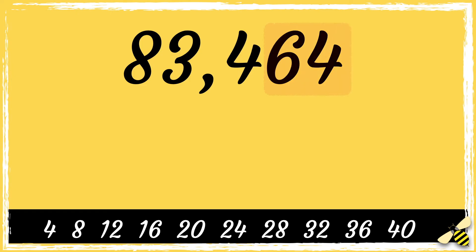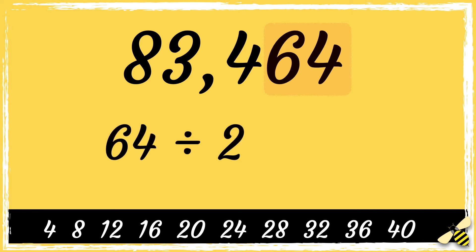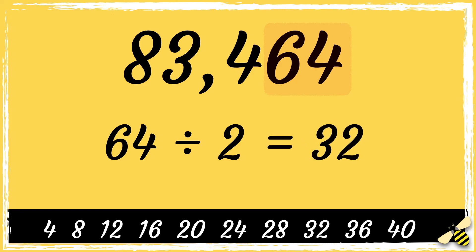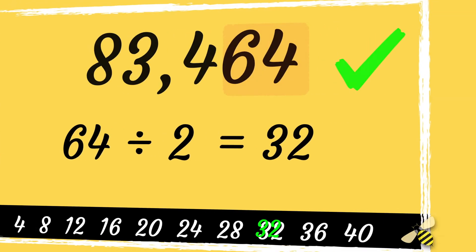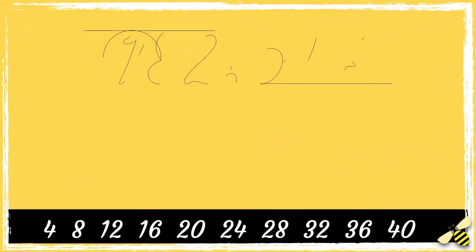Now we have 83,464. Let's look at the last two digits. If you're not sure if 64 is a multiple of four, you could half it and then see if it's a multiple of four. Half of 64 is 32, and 32 is a multiple of four, so that means that this number is divisible by four.